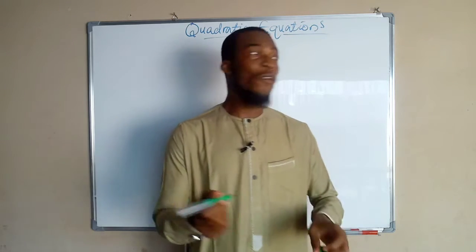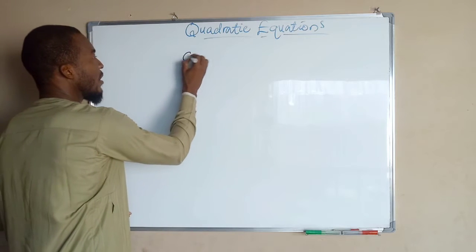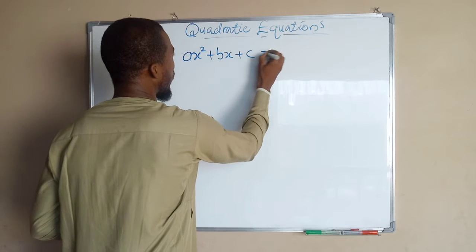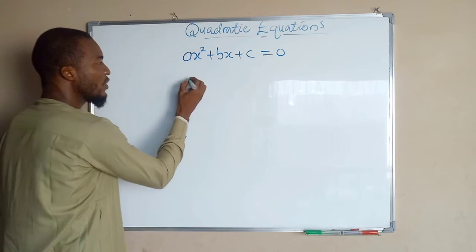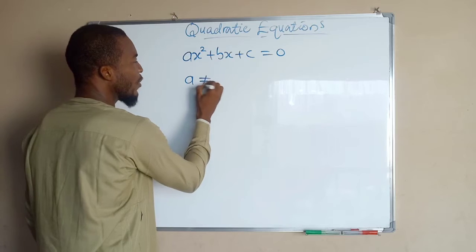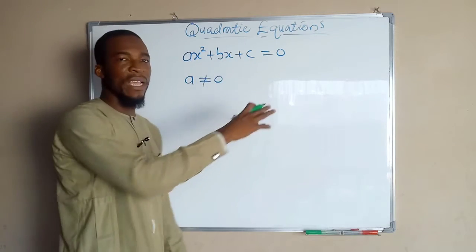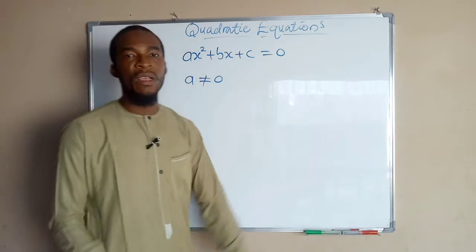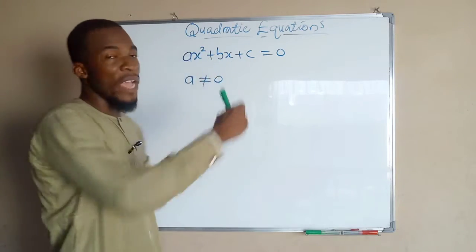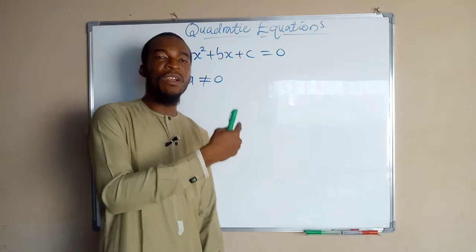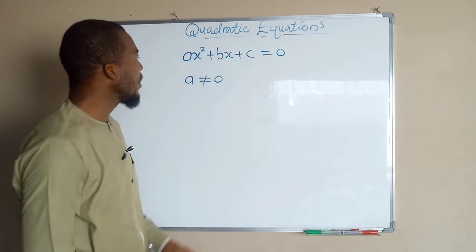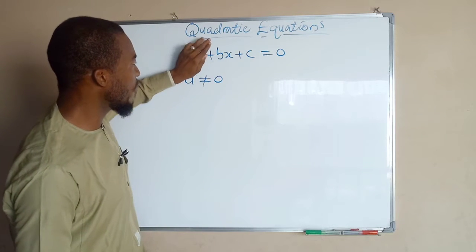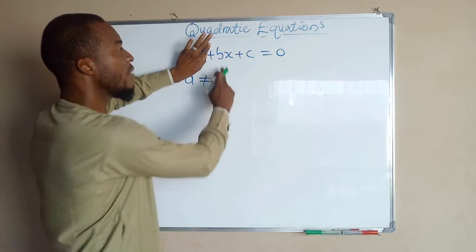The general form of a quadratic equation is written as ax squared plus bx plus c equals 0, for which a is never equal to 0, but b and c can be equal to 0. We say a quadratic equation is a polynomial equation of degree 2, and the highest degree for a quadratic equation is 2. The reason a is never equal to 0 is because if a equals 0, the whole term will vanish, leaving a linear equation.